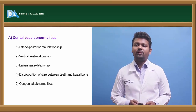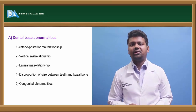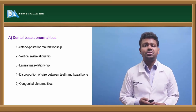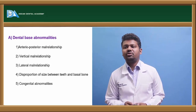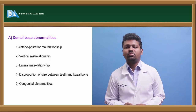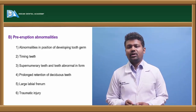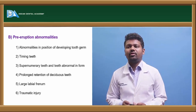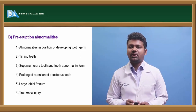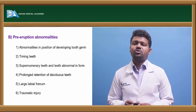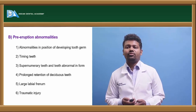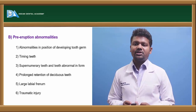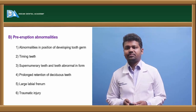Dental-based abnormalities include anteroposterior malrelationship, vertical malrelationship, lateral malrelationship, disproportion of size between teeth and basal bone, and congenital abnormalities. Pre-eruption abnormalities include abnormalities in the position of developing tooth germs, timing of teeth eruptions, supernumerary teeth, teeth abnormal in form, prolonged retention of deciduous teeth, large labial frenum, and traumatic injuries.